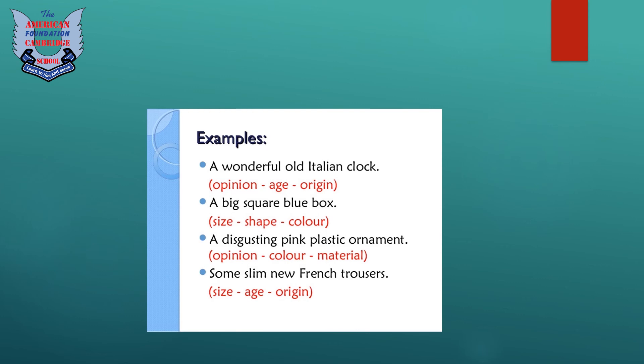Next example is a big square blue box. Big is the size, square is the shape, and blue is the color. We have arranged these three adjectives in a sentence according to the rule, according to the order which I explained to you in the previous slides.